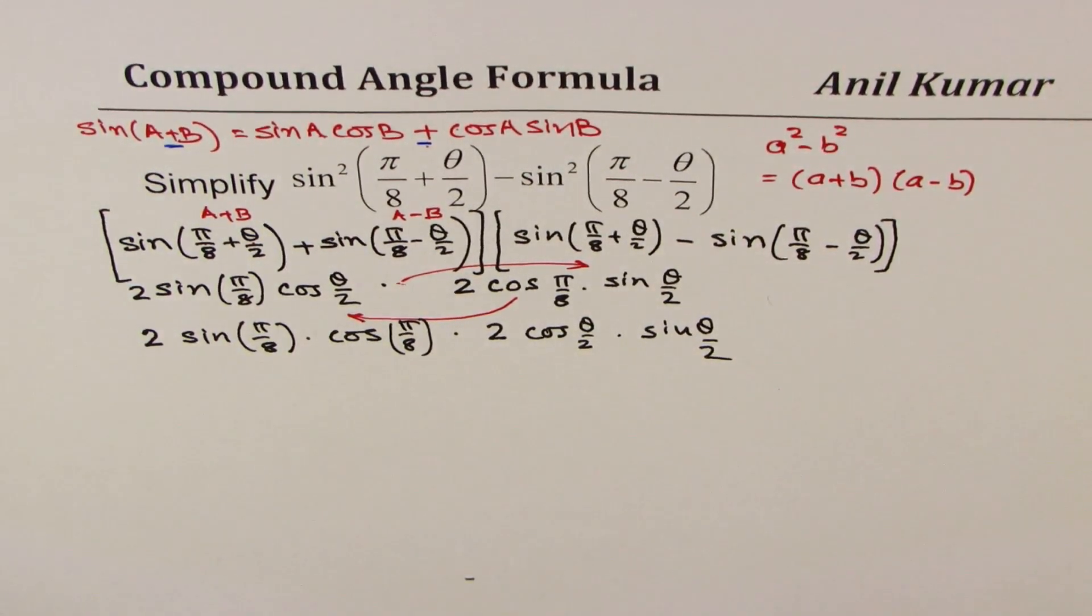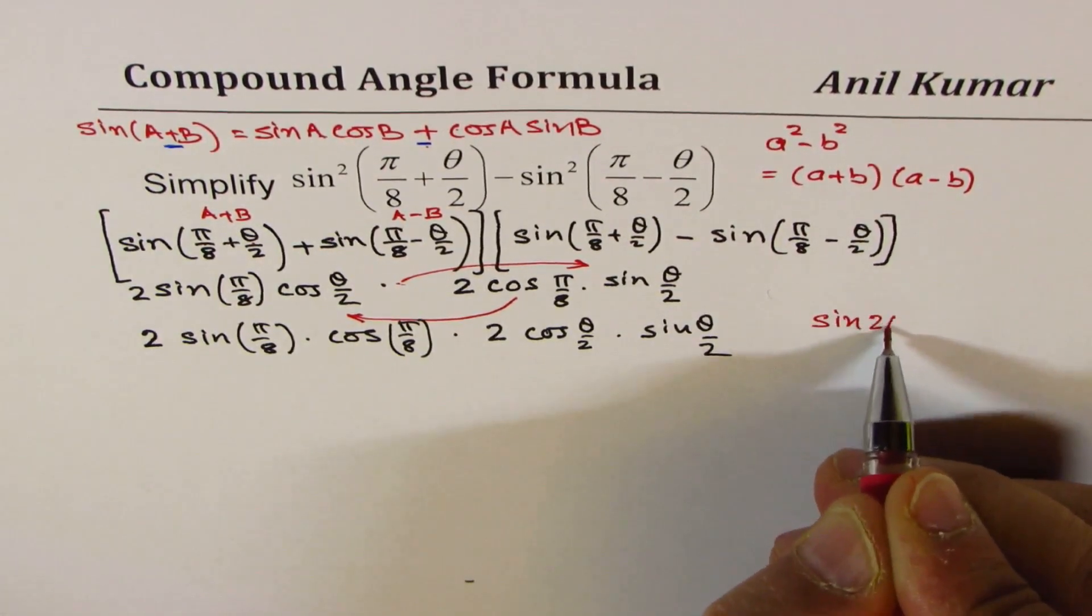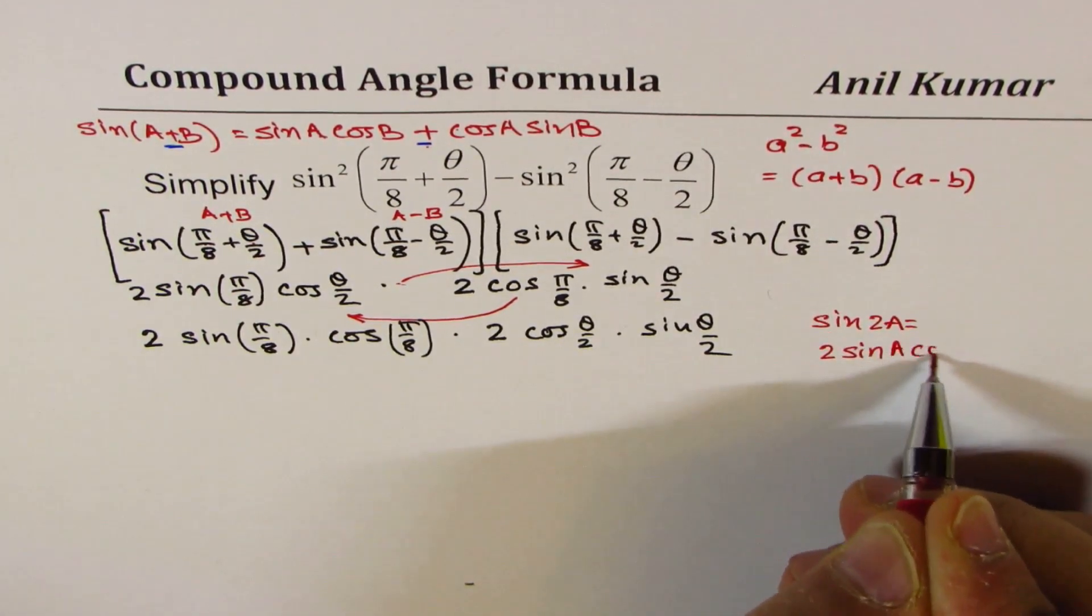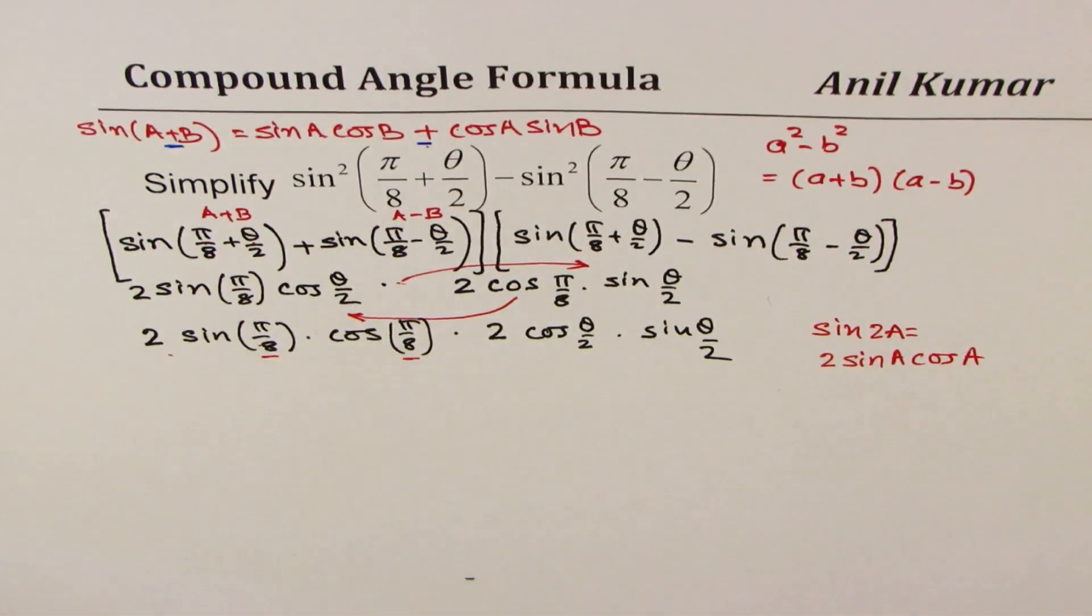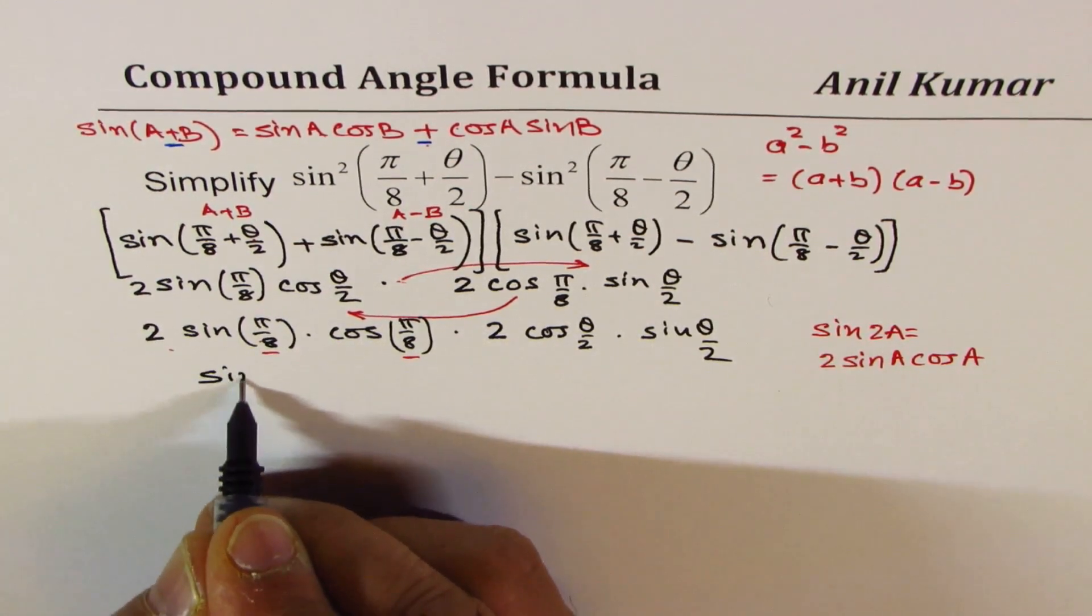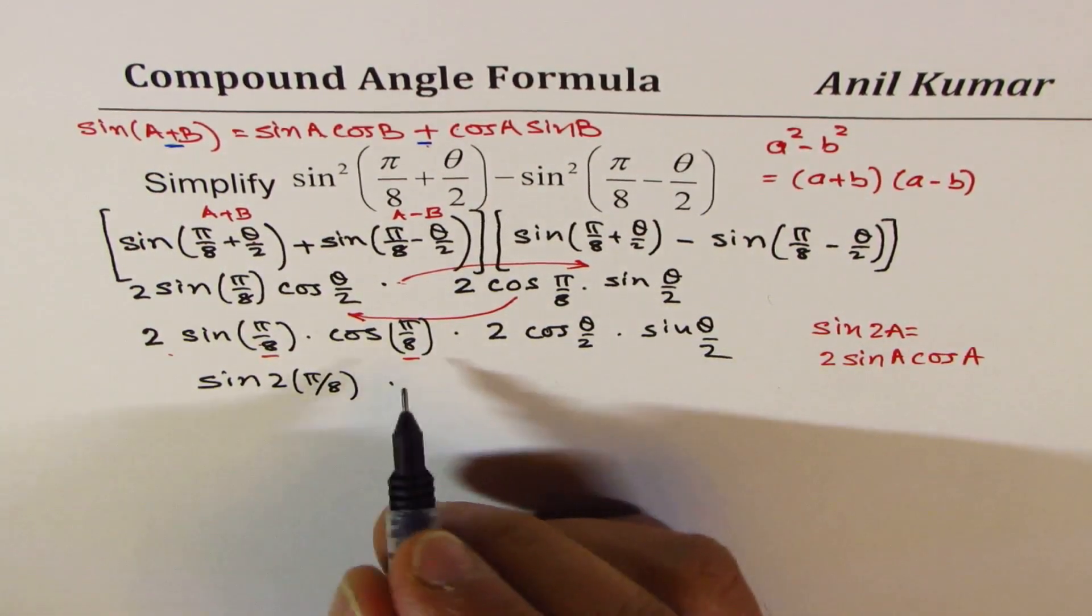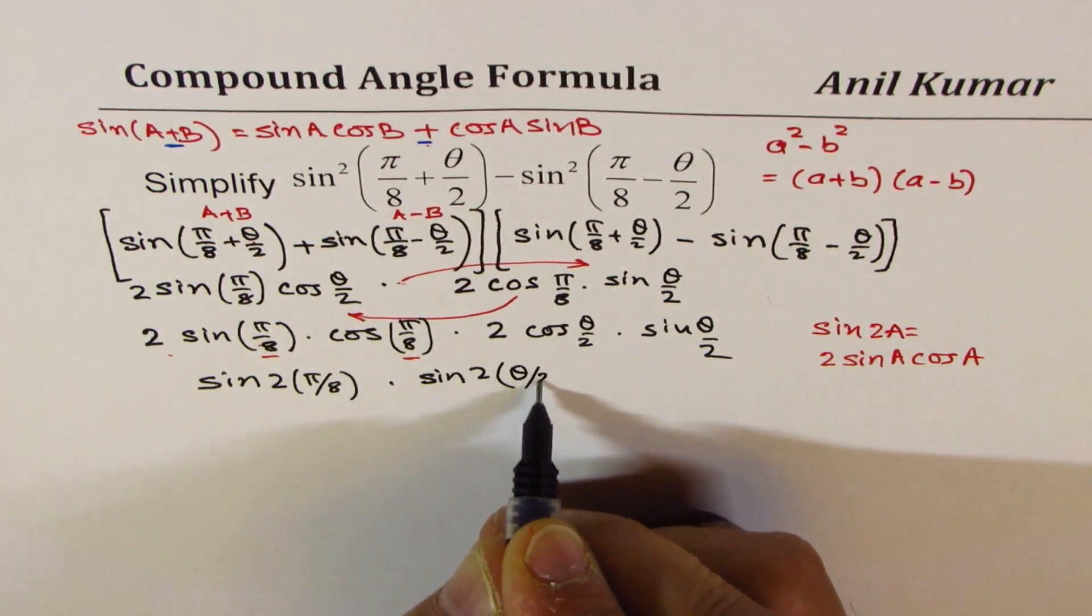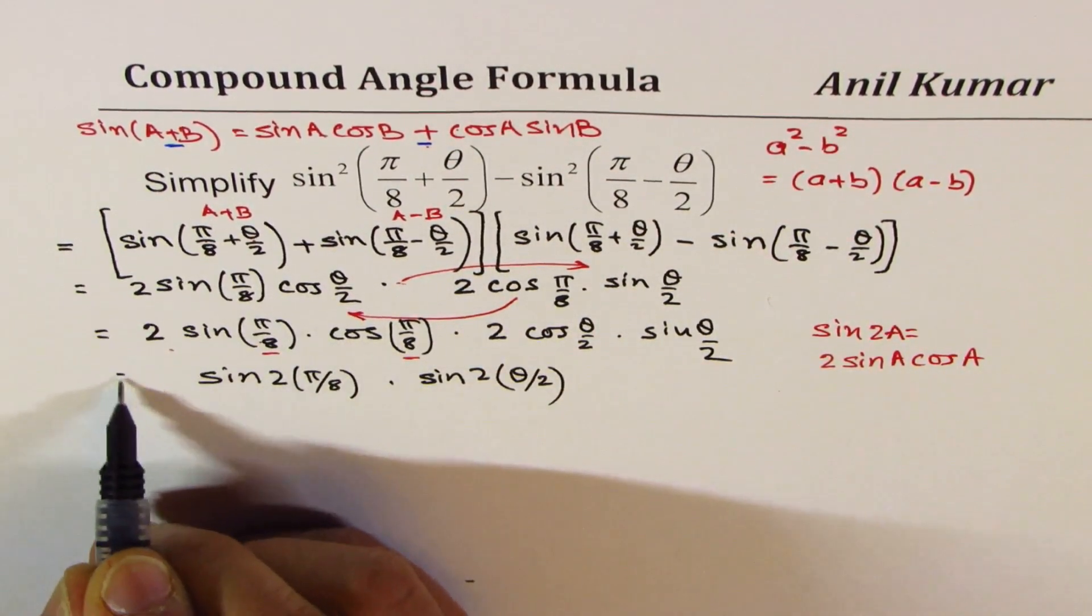Does that remind you of something? Now this is a double angle formula. We know sin(2a) is 2sin(a)cos(a). So we have a, now the angles are π/8. So I could write this term, the first term, as sin of twice π/8. And this term also, I can write this as sin of twice θ/2. So that is how we could in steps simplify it.